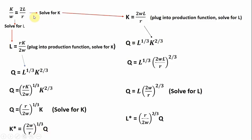Going back and solving for K from the optimal mix condition: multiplying both sides through by W gives us K equals 2WL divided by R. Substituting this into the production function wherever we see a K — with everything raised to the two-thirds power — we note that L to the one-third times L to the two-thirds is just L. Solving for L gives us the long-run conditional input demand for labor, conditional on the firm's level of output Q shown on the right-hand side.